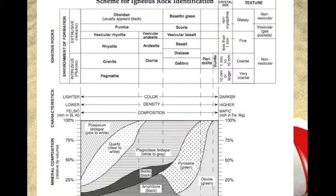The rocks on the right side of the graph are composed of the minerals on the right side of the graph, and the rocks on the left side of the graph are composed of the minerals on the left side of the graph.